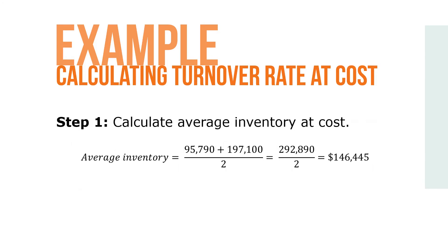Step one: calculate the average inventory at cost, which equals $95,790 plus $197,100 over two, which gives us $292,890 divided by two, which equals $146,445.